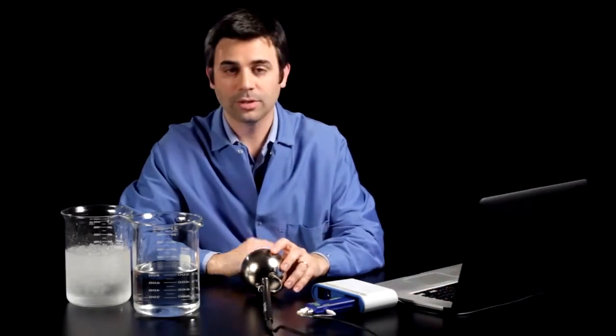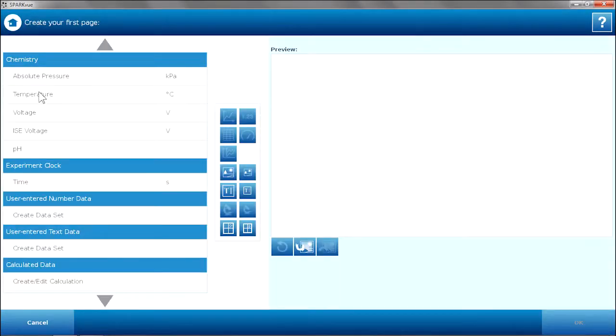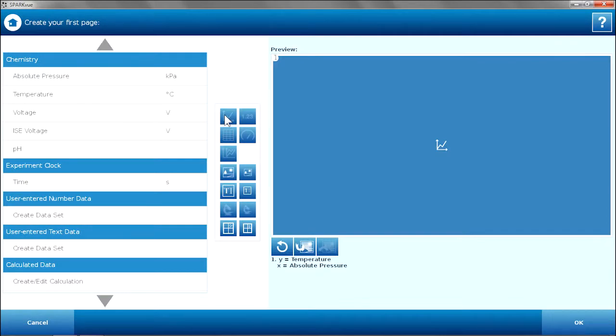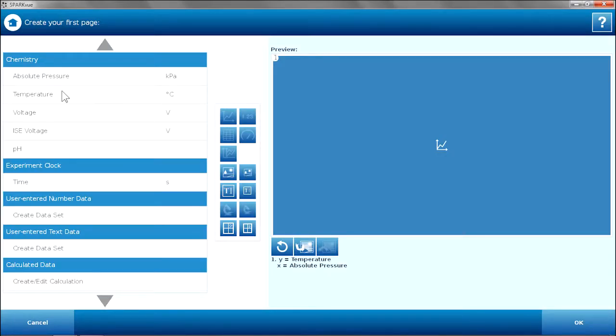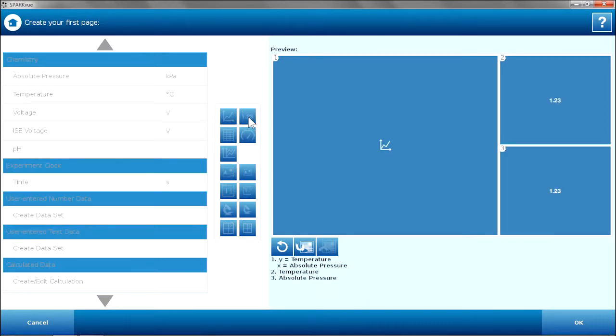I am going to build a page to look at the relationship between pressure and temperature. I am going to go to Build. I am going to look at temperature and pressure in a graph. I also want to monitor those two values, so I am going to look at them in a digits display. Temperature in digits, and pressure in digits.